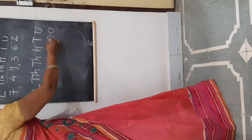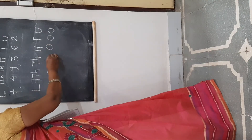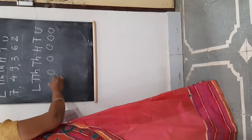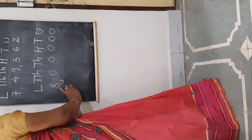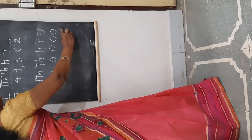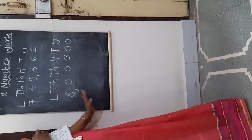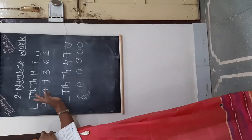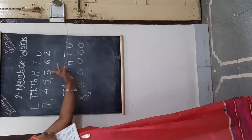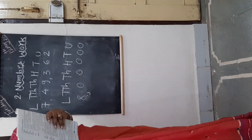10, 100, 1000, 10,000, and lakh — so this is the number 8 lakh. Take some examples on your own and try to write the numbers in figures. Thank you.